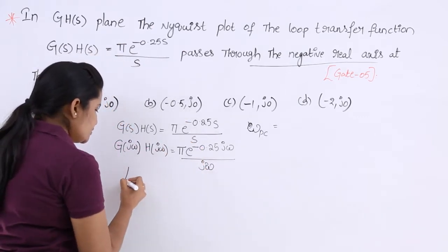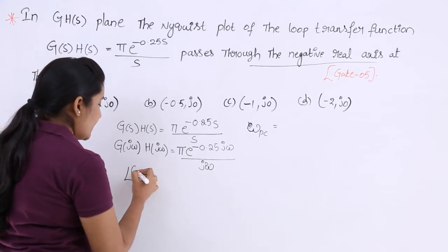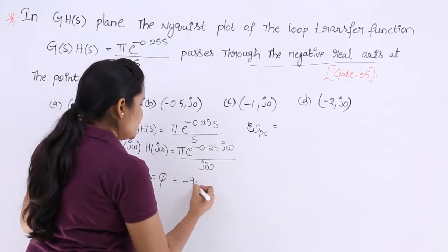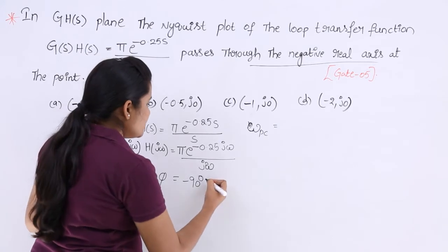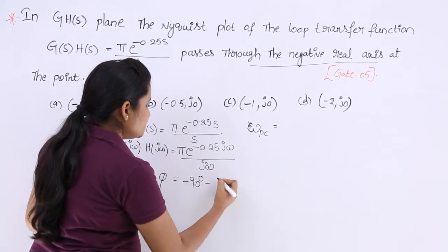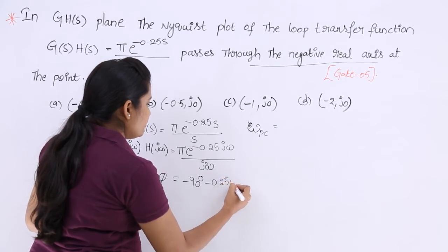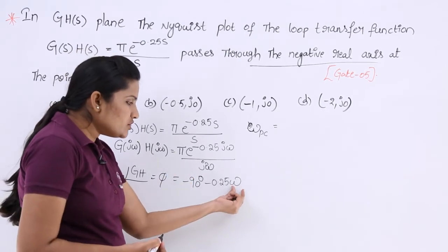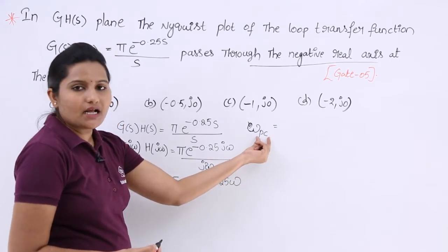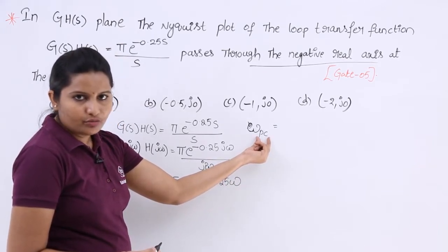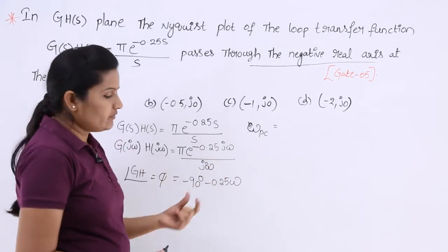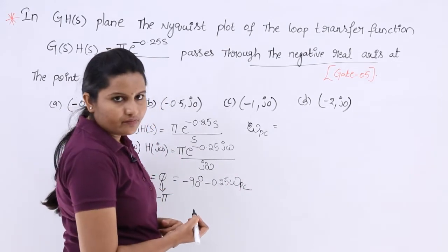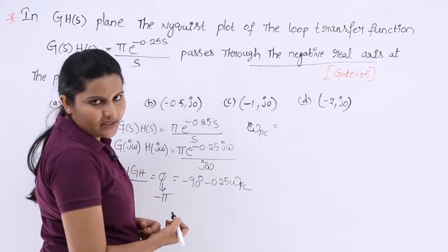Now, considering the angle: the phase angle φ of G(jω)H(jω) equals minus 90 degrees (from the 1/jω term) minus 0.25ω (from the exponential delay term e^(-0.25jω)). So, φ = -90° - 0.25ω. If we want this ω to be the phase crossover frequency, we need to equate this phase to minus π (minus 180 degrees).